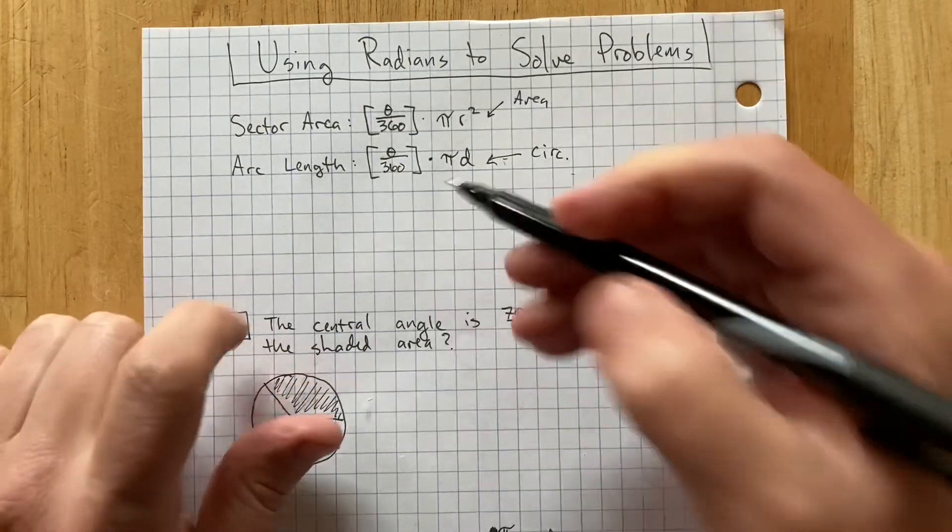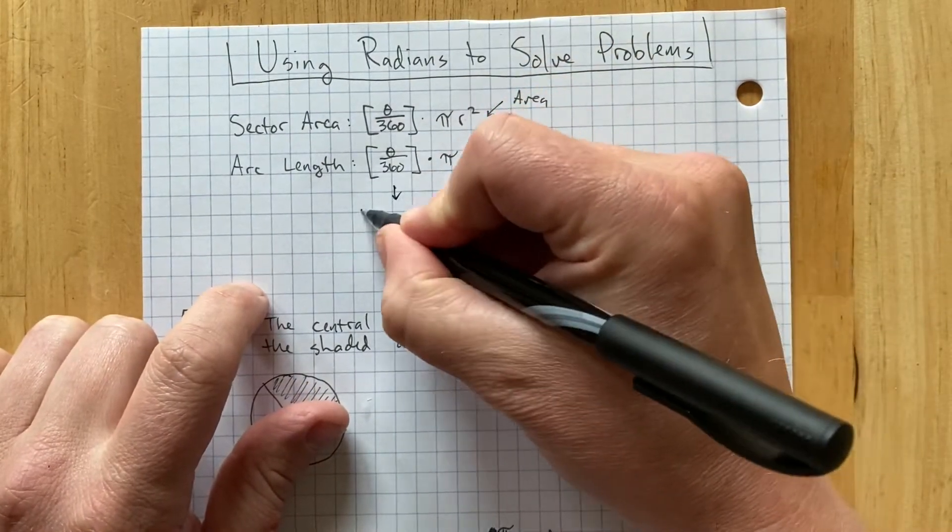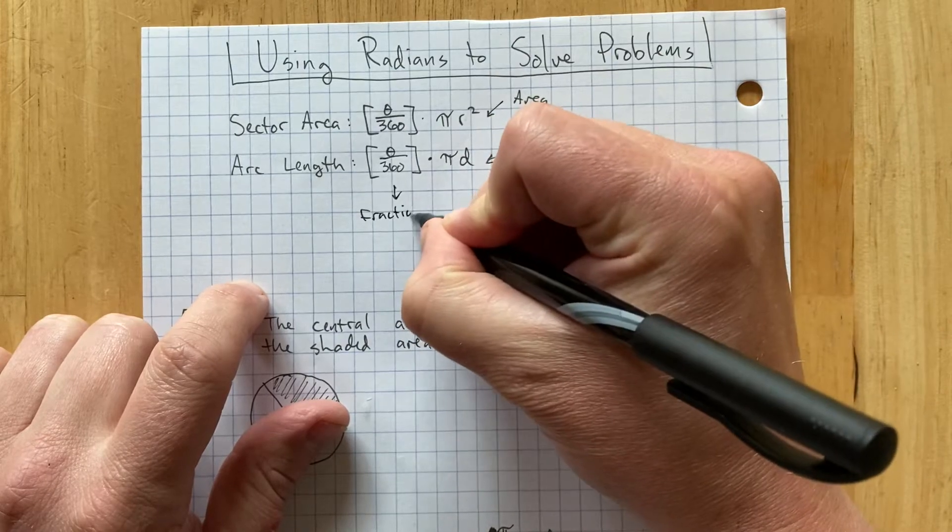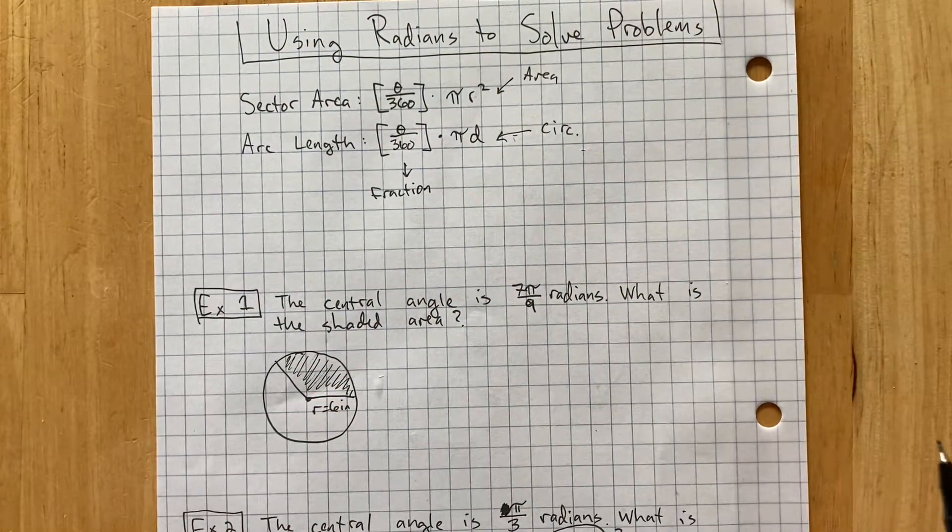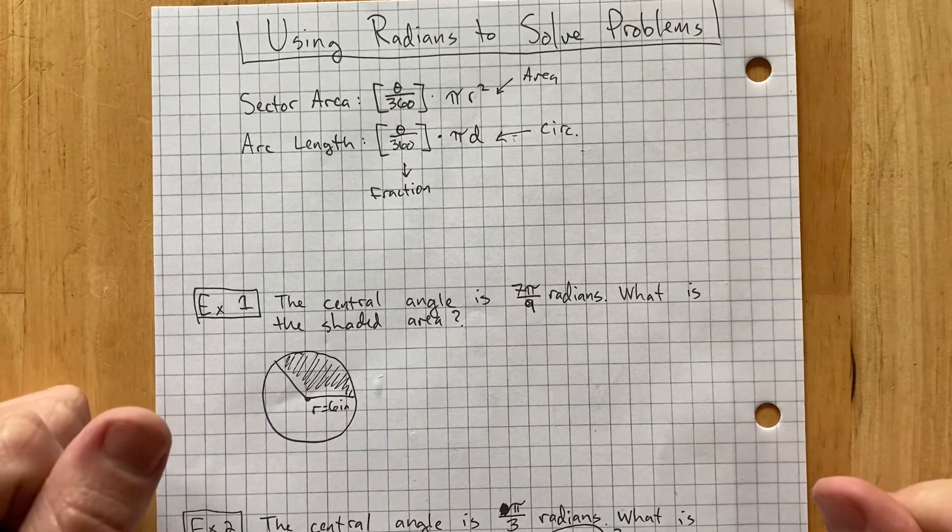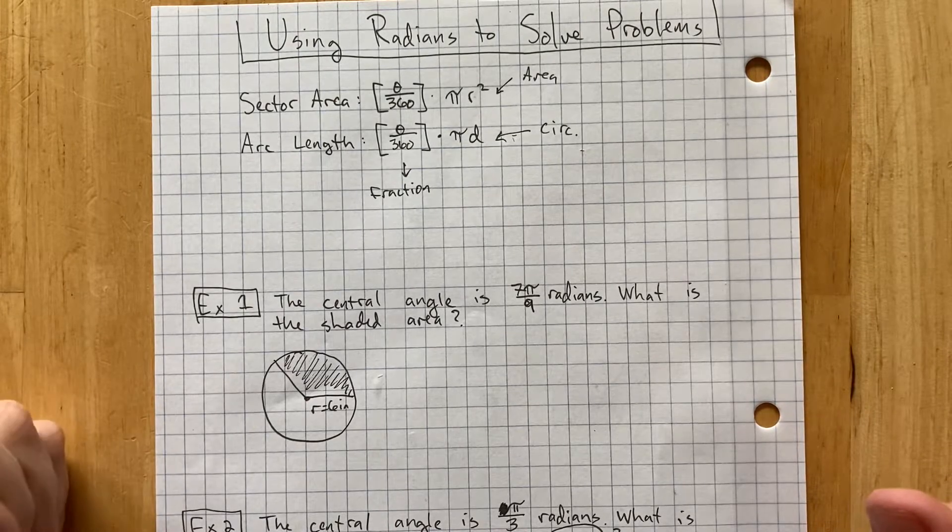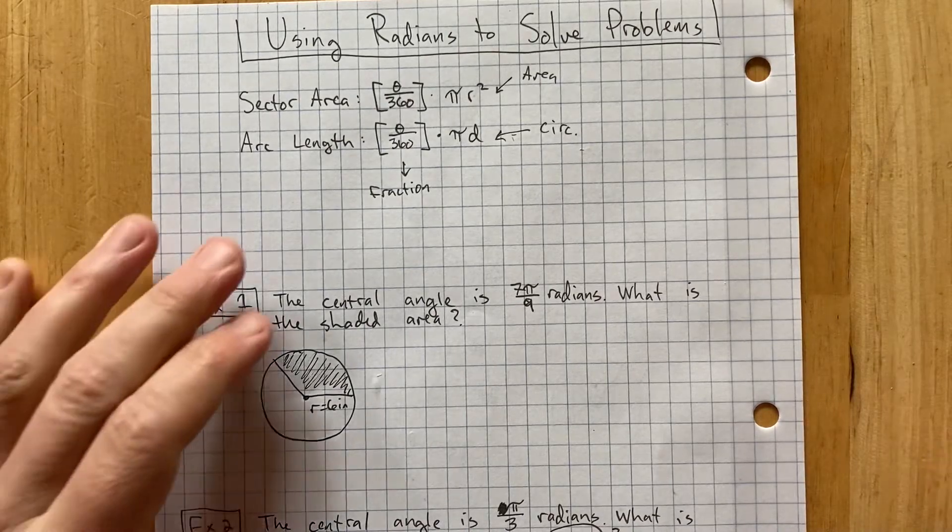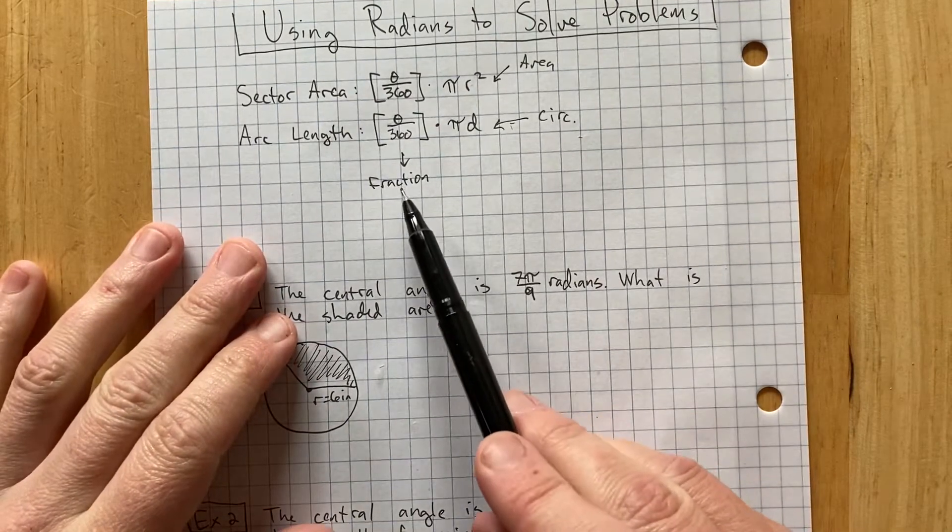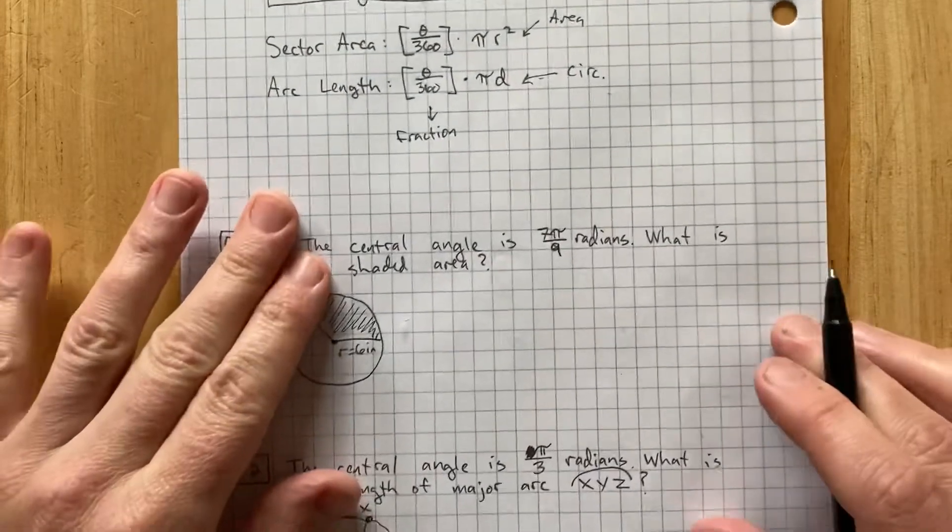But both of them have this theta over 360, and that part is the fraction of the entire circle that you're dealing with. And that could be, you know, one third of the circle, or 300 360ths of the circle, or 51 360ths. It can be lots of different fractions, but this theta over 360 is the fraction.